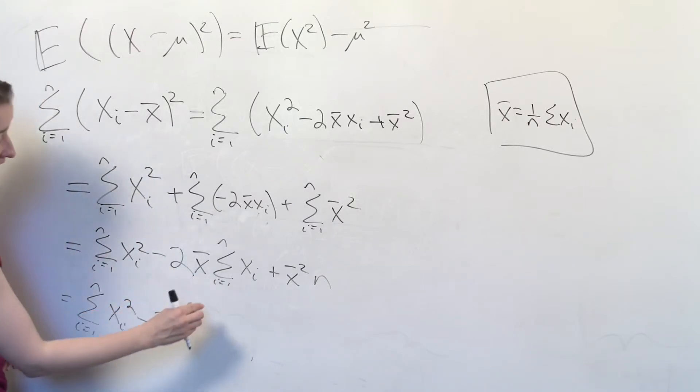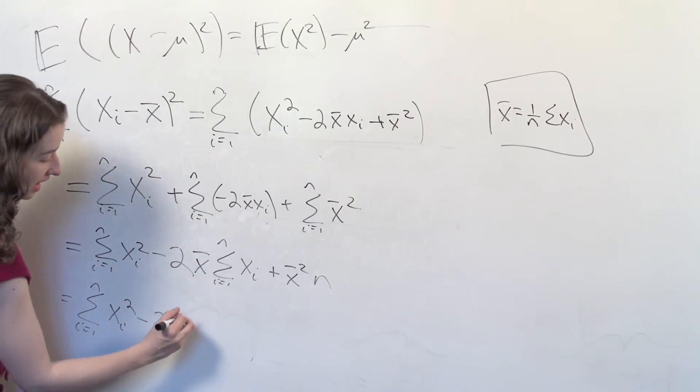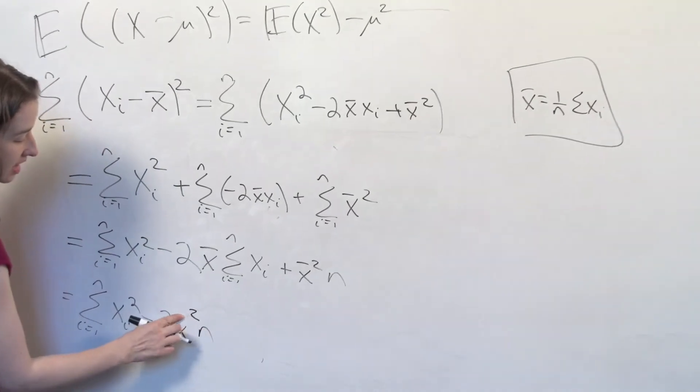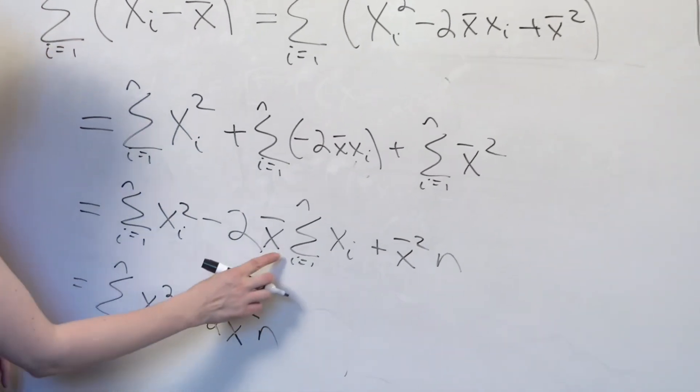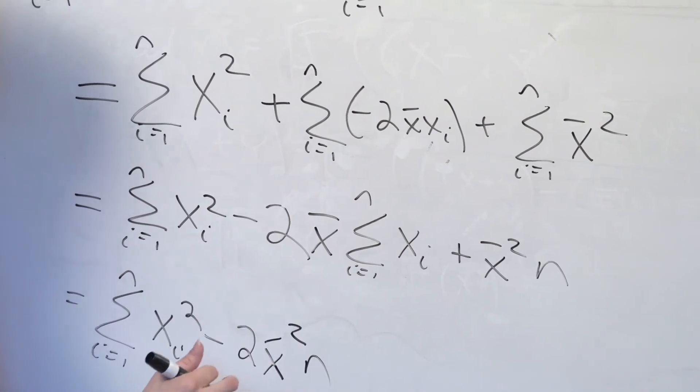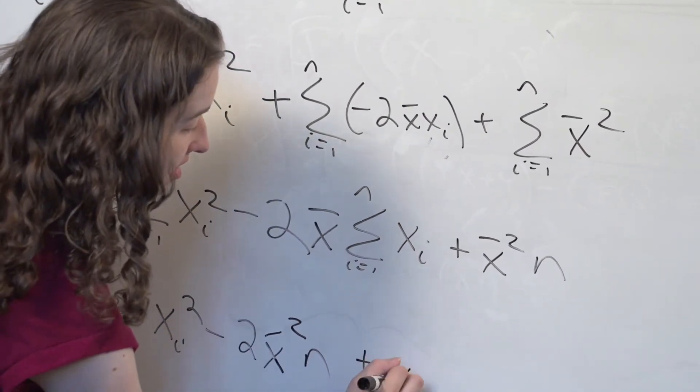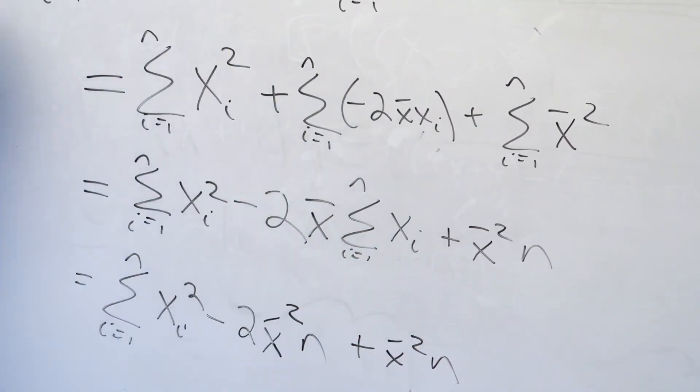Negative 2 x bar times x bar times n. There's a square here because there's one x bar here and one x bar that's coming out of this. Great. Plus x bar squared times n.